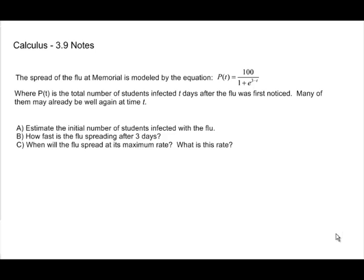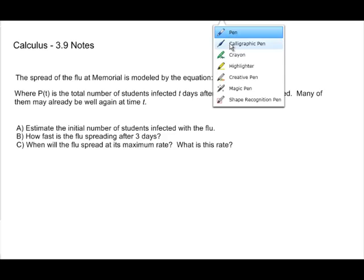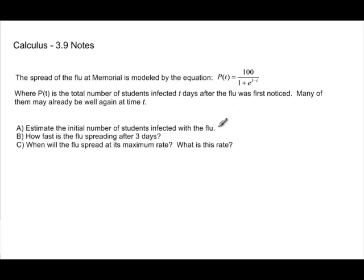Okay, so we're going to check out how the flu spread at Memorial, and we've got an equation for this: P(t) equals 100 over 1 plus e to the 3 minus t power. So we want to estimate the number of students affected, the initial number of students affected with the flu. And when we do that, basically what this means is we want to know what's going on on that very first start day. So when this is at t equals zero, when t equals zero, that's when we can figure out how many kids were initially caught with the flu.